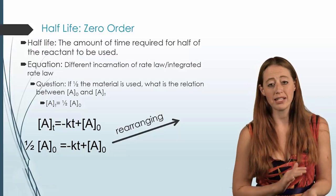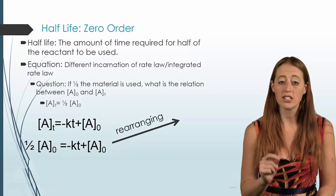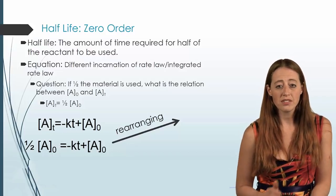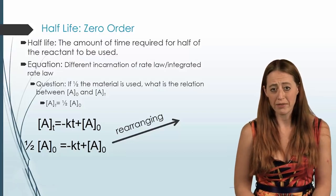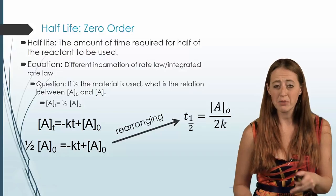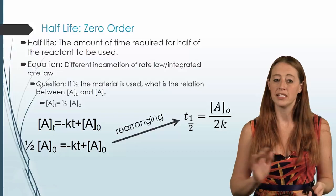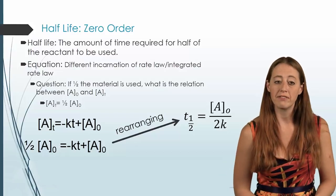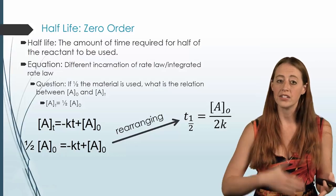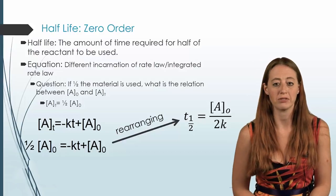So we have the time it takes to use up half of our material just in terms of initial concentration — that's a really useful thing to have. This is the one time I'll derive this for you. For first and second order, I'll just give you the integrated rate law and the half-life formula, and you should work out the connection point yourself: fill in AT equals one-half A0 and see how we arrive at the other equation.